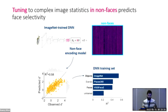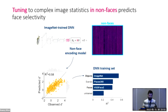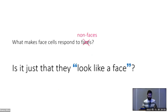The extent to which the non-face encoding model could predict face selectivity depended on the type of images the deep network was trained on. This worked best for a network trained on general image recognition — even better than for a network trained on face classification. Basically, tuning for rich statistical features optimized for general object classification could best capture face selectivity from the response structure of non-face images.